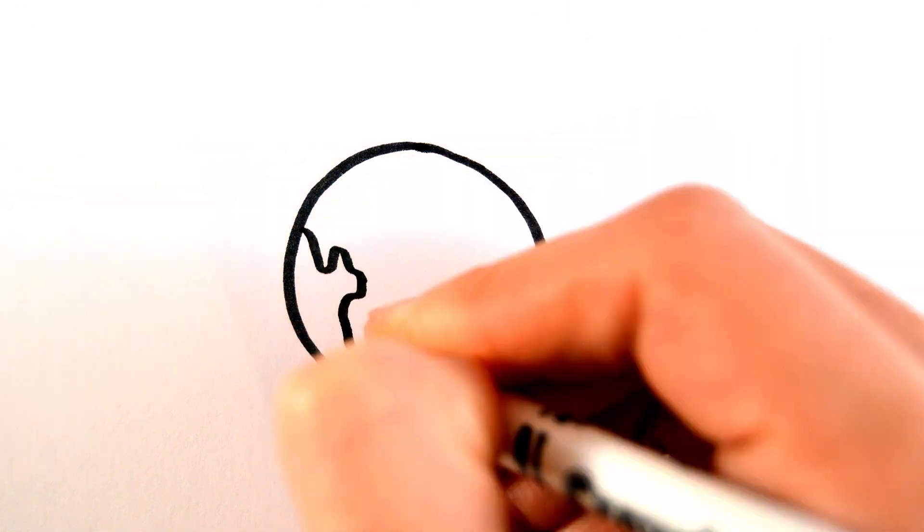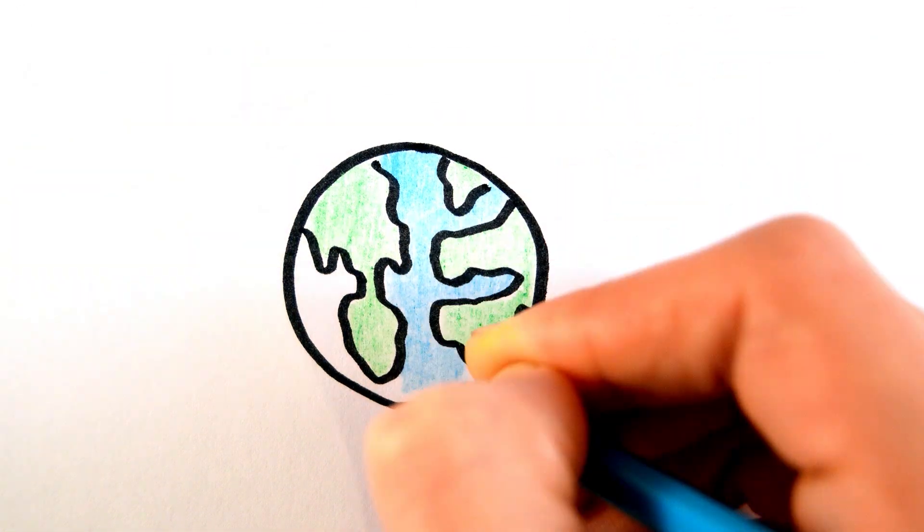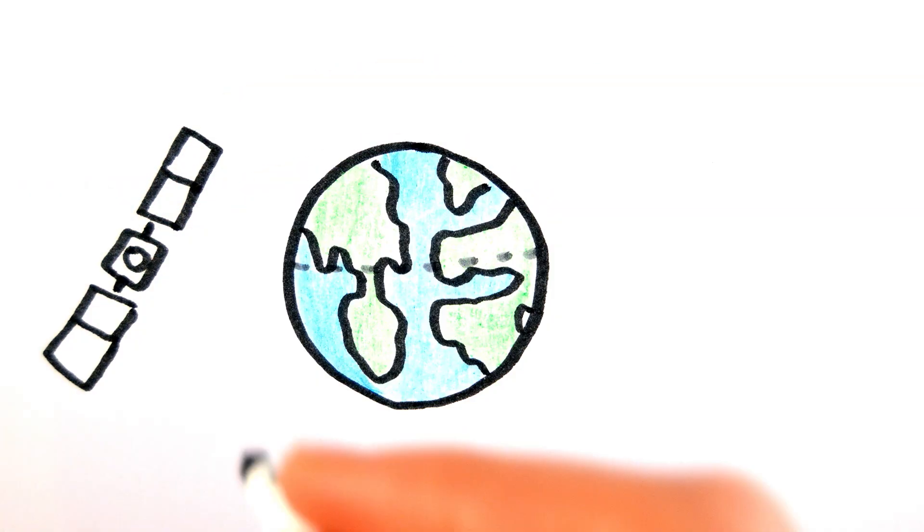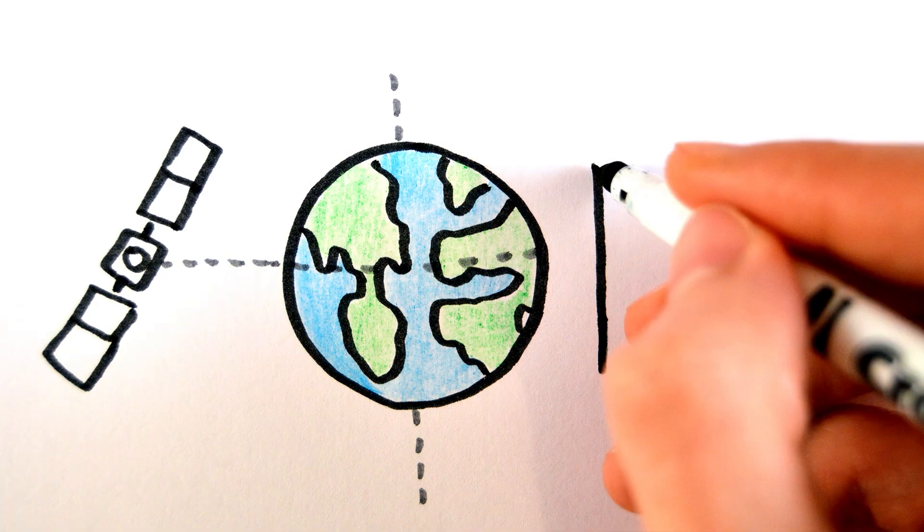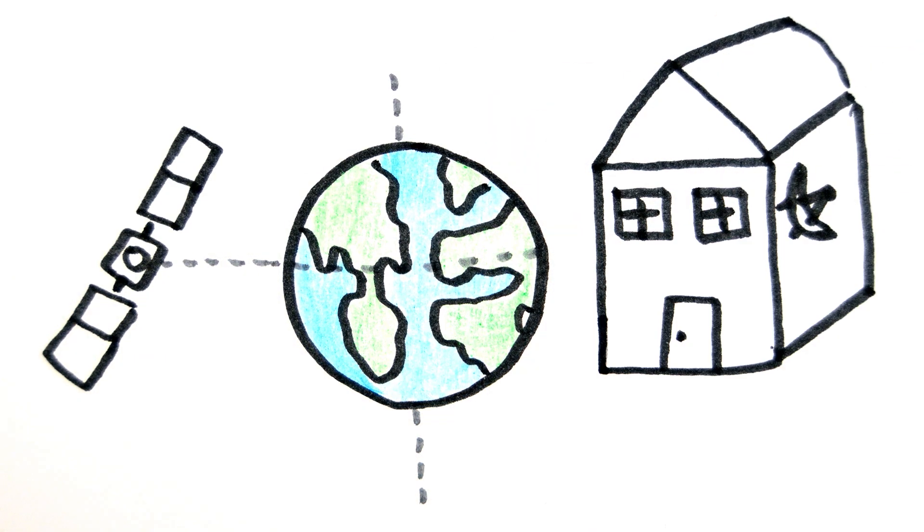A geostationary orbit is an orbit around the Earth whose orbital period is 24 hours. They are located above the equator and are always vertically above the same point on the surface of the Earth. This makes them useful for TV satellites because the dishes can be pointed to a fixed point in the sky.